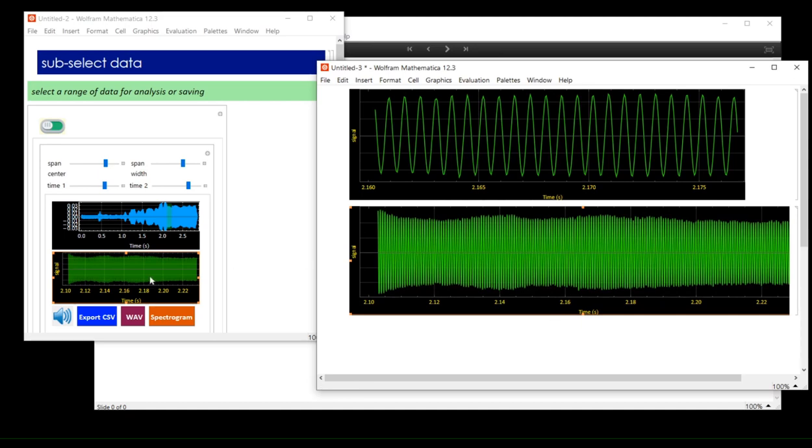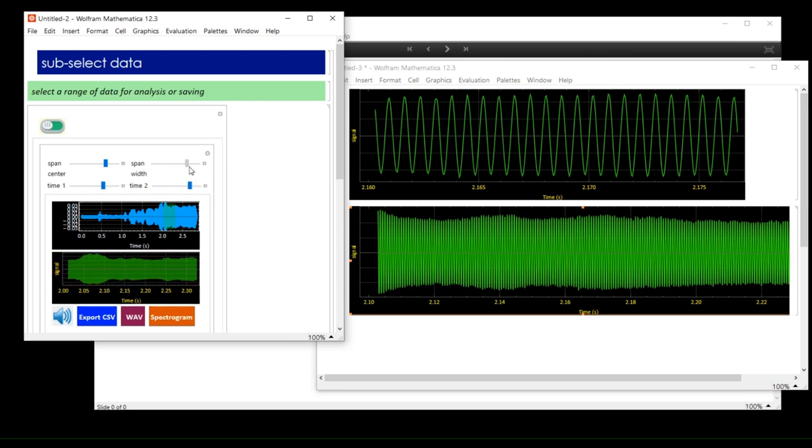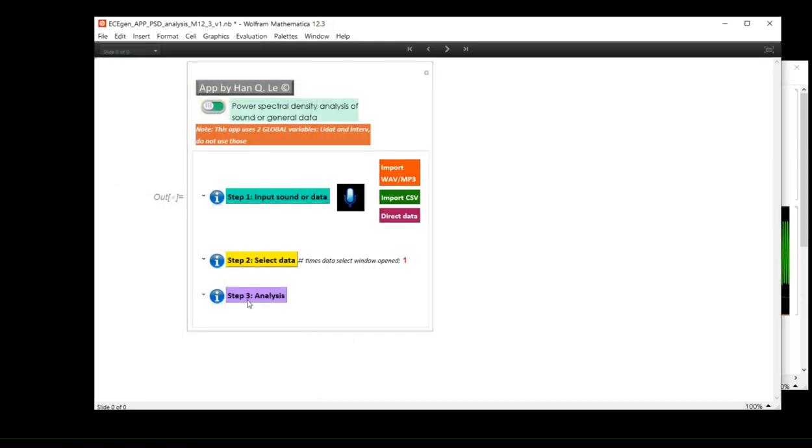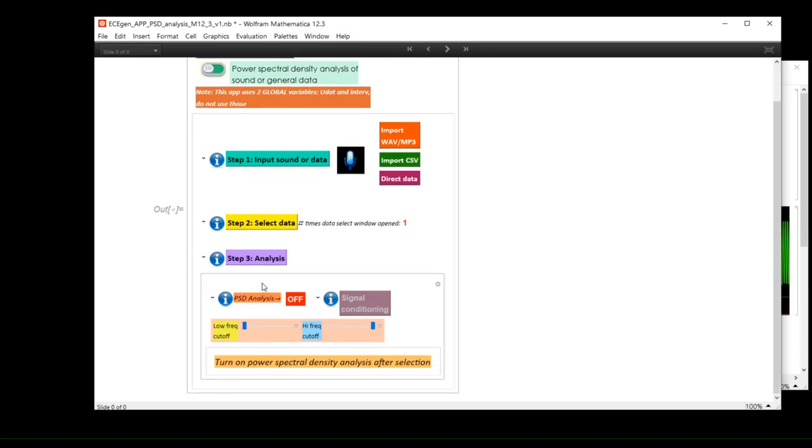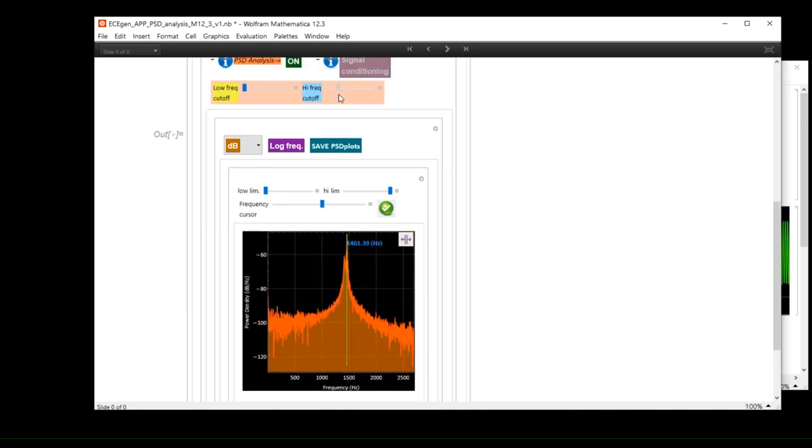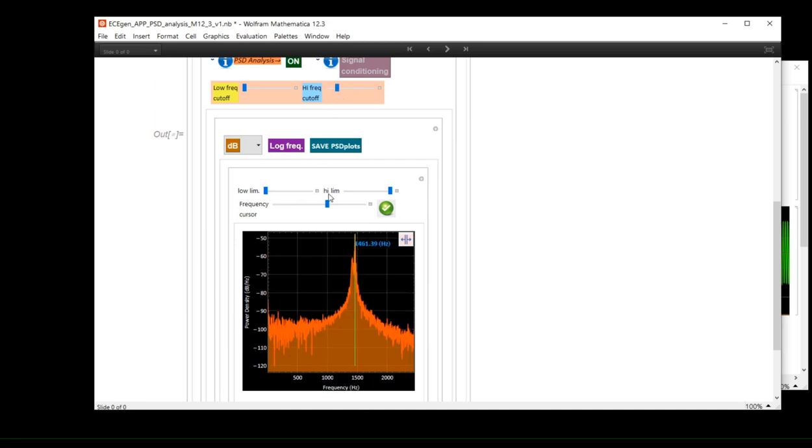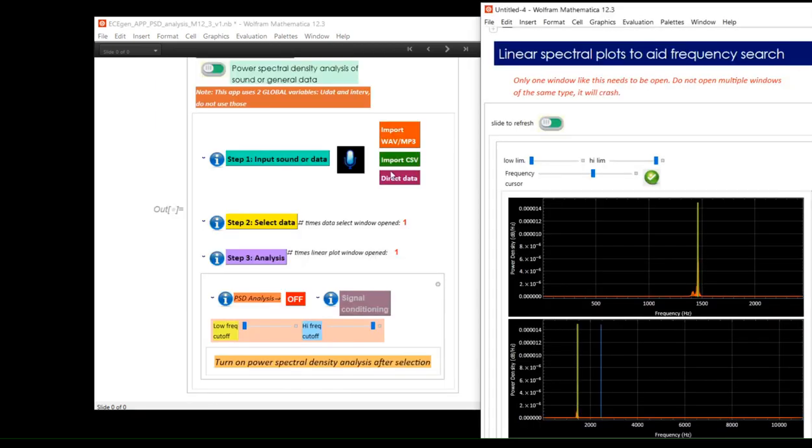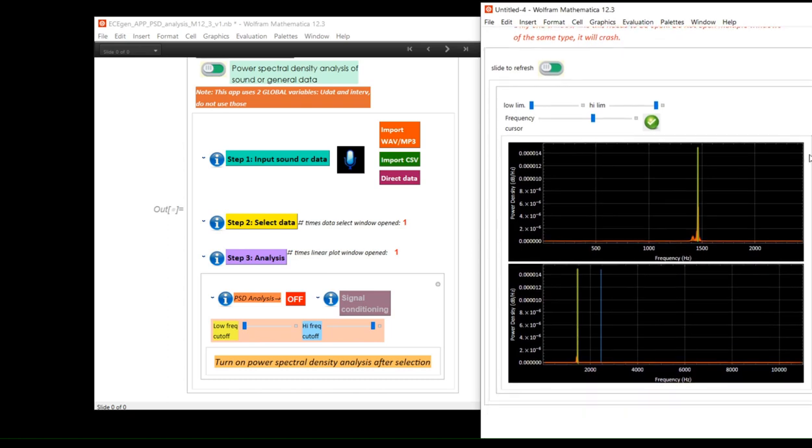The recorded whistling of that 130 millisecond interval is played. A longer interval is selected for Fourier analysis. The power spectrum shows a narrow frequency band around 1461.4 hertz. In other words, almost a pure sinusoidal signal. The whistling spectrum is displayed on the linear scale.